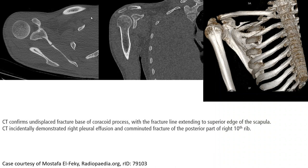CT also demonstrates fracture at the base of the coracoid process, and fracture at the base of the scapula. CT incidentally demonstrates fracture of the posterior arc of the ribs.